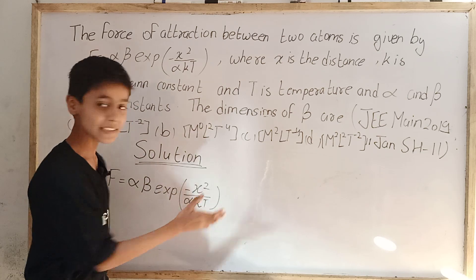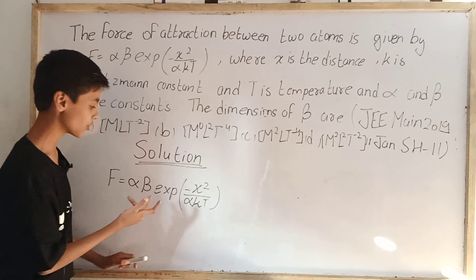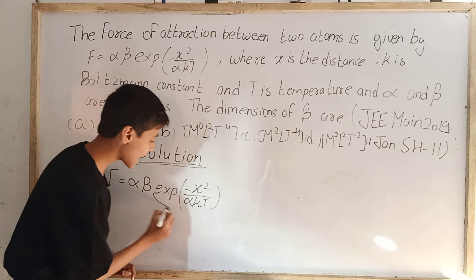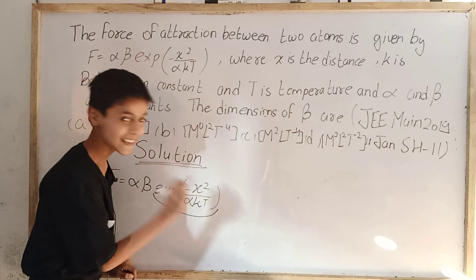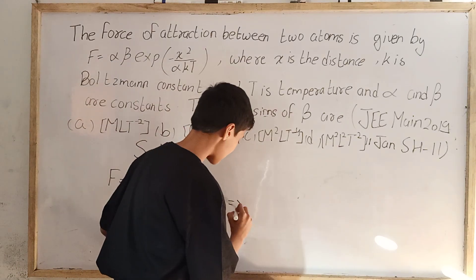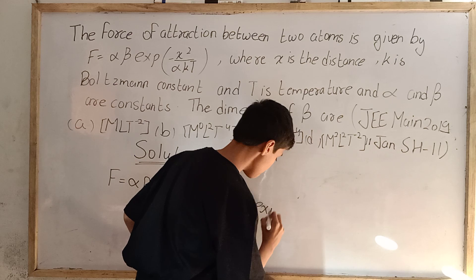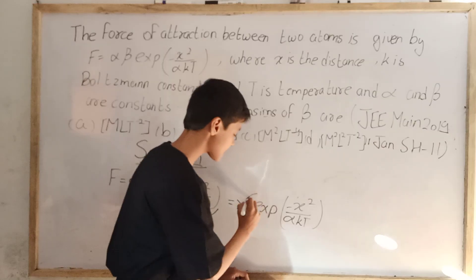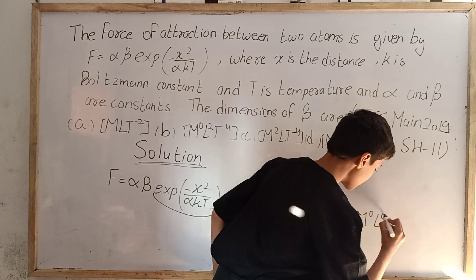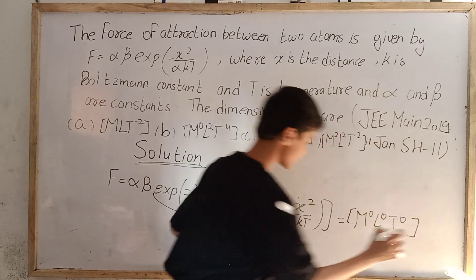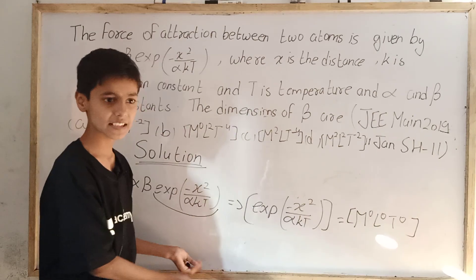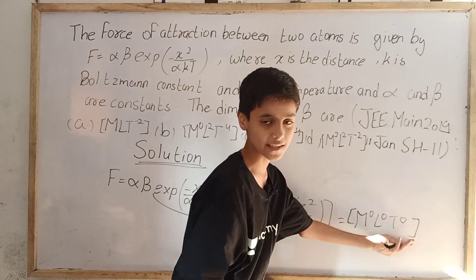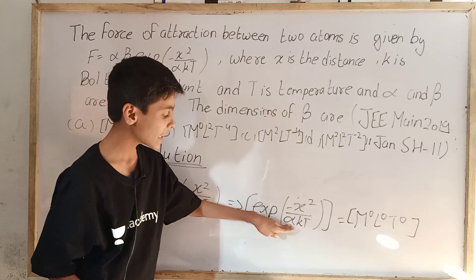Since you have studied dimensional formula, you surely know that an exponential is always dimensionless. This is a very nice hint for this question. Because the term exp(−X² / (alpha·K·T)) is dimensionless, its dimensions are M⁰L⁰T⁰.